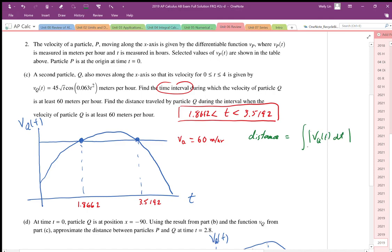And we want that from the lower bound of 1.8662 to the upper bound of 3.5192. So then this portion here we're going to get by integrating on our graphing tool between 1.8662 to 3.5192. That area, when I put it in my calculator, gives me 106.1088 meters.